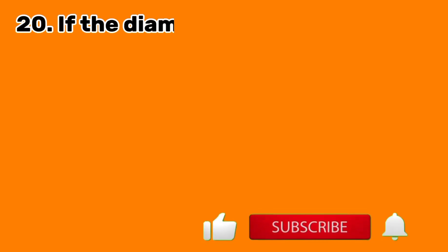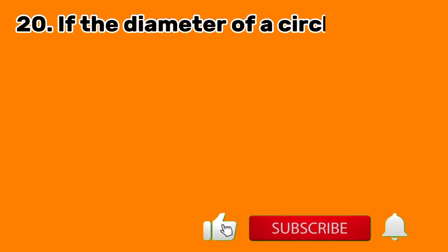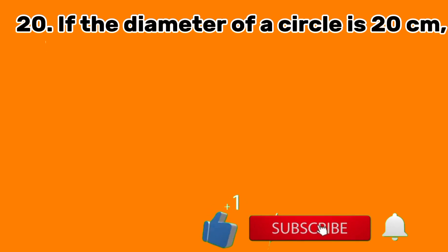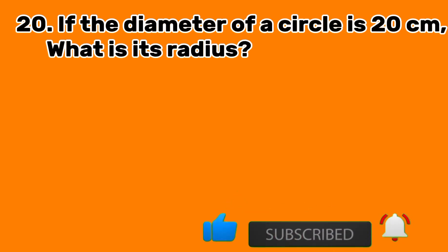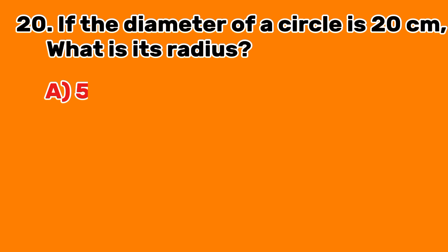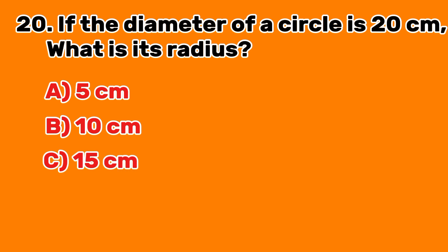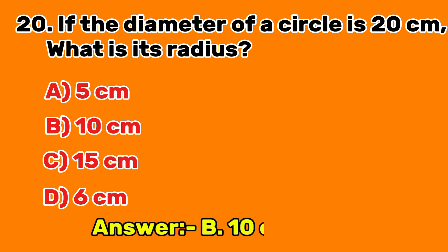Question 20: If the diameter of a circle is 20 cm, what is its radius? A. 5 cm. B. 10 cm. C. 15 cm. D. 6 cm. Answer B: 10 cm.